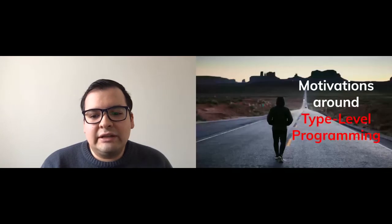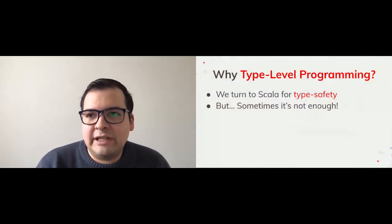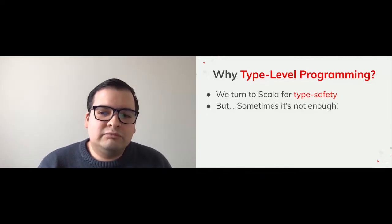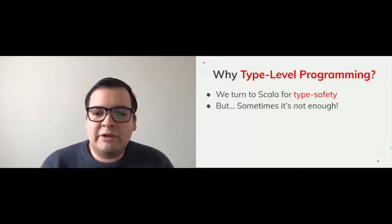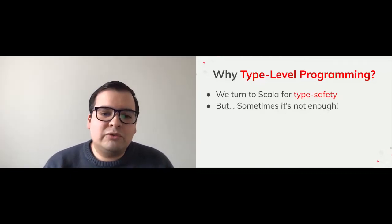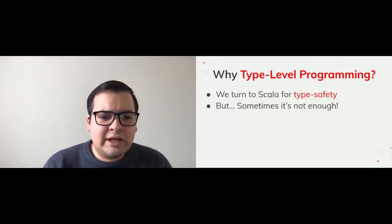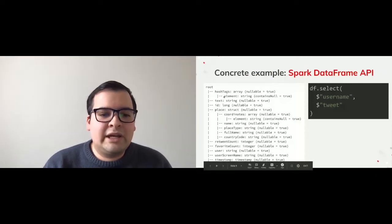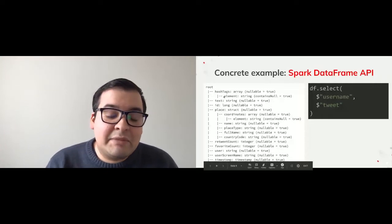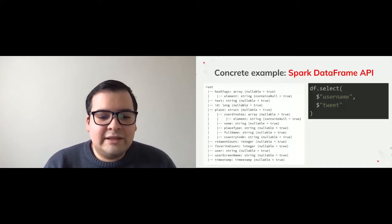So what are the motivations around type-level programming? Well, we use Scala for type safety — that's a very important feature in the Scala language. But sometimes that's not enough. I want to show you a concrete example around the Spark DataFrame API, where we have lots of potential for runtime bugs. Suppose I have a DataFrame containing data about some tweets from users with several columns.